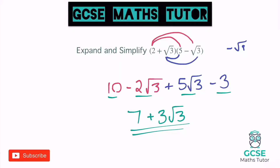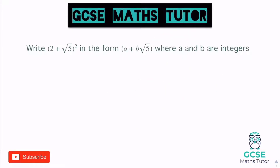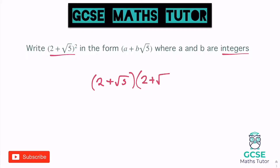On to the last example before you have a go. So slightly different wording here: write (2 + √5) squared in the form a + b√5 where a and b are integers — integers being whole numbers. This bracket squared is just a double bracket, just another way of writing when a bracket is multiplied by itself. So I'm going to rewrite this as (2 + √5)(2 + √5) and expand from there.